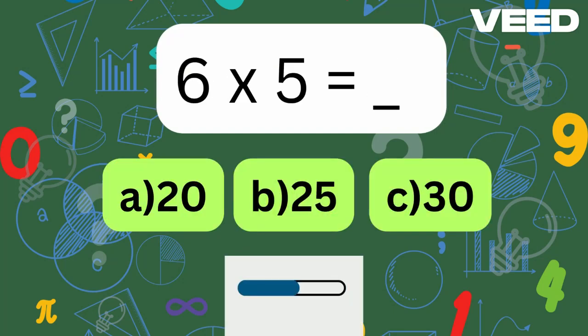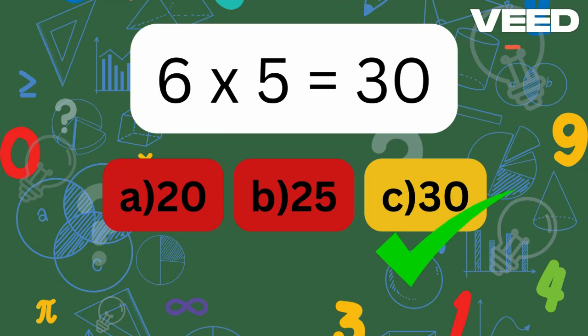What is 6 times 5? You got it, 6 times 5 is 30.